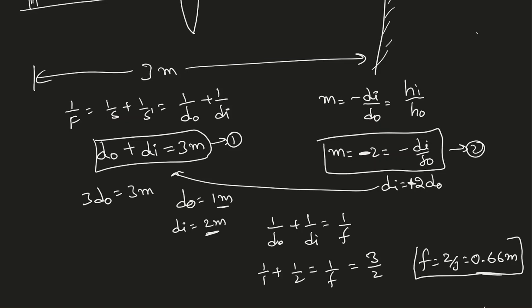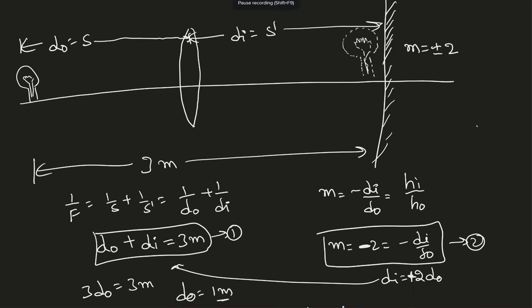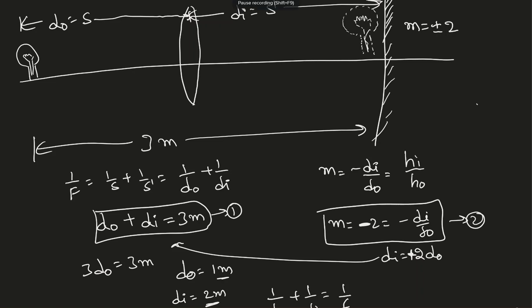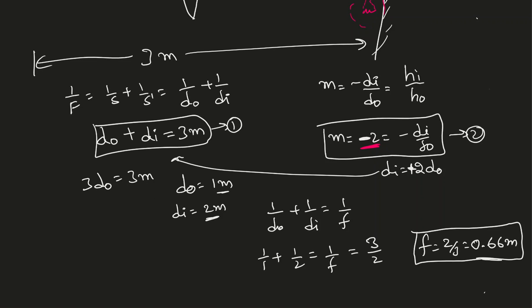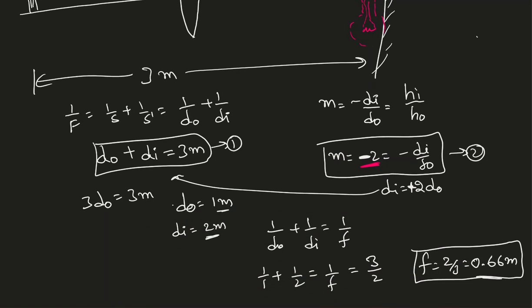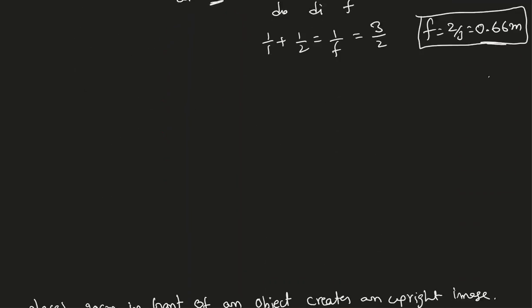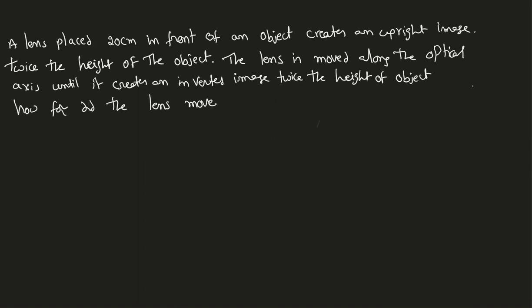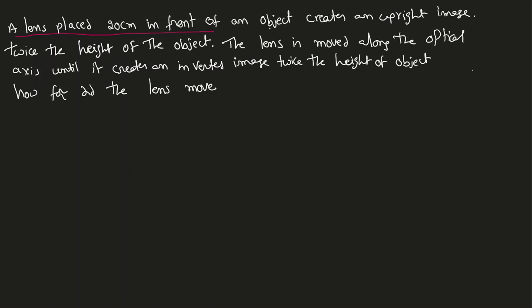Since the focal length is positive, this confirms it is a converging lens — and a converging lens is the only one which can project an image onto the wall. The magnification factor is negative, so the image must be inverted — not upright as I drew earlier. The final answer: the image is inverted and the distance from the light bulb to the lens is 1 meter. Next example: a lens placed 20 centimeters in front of an object creates an upright image twice the height of the object.